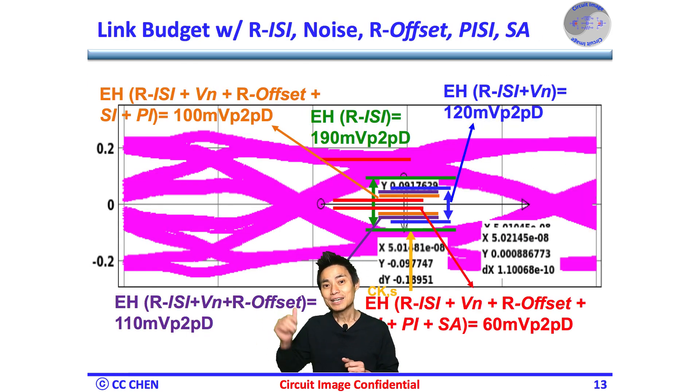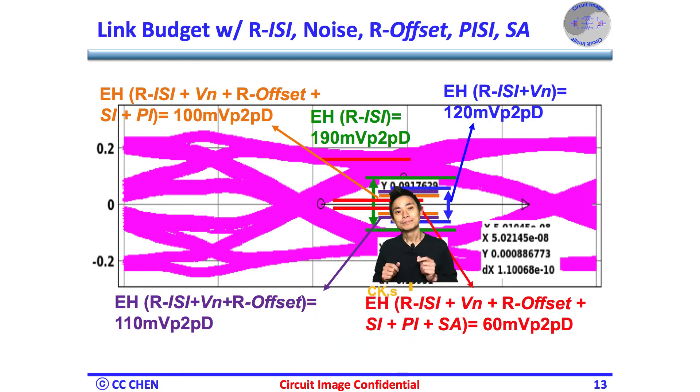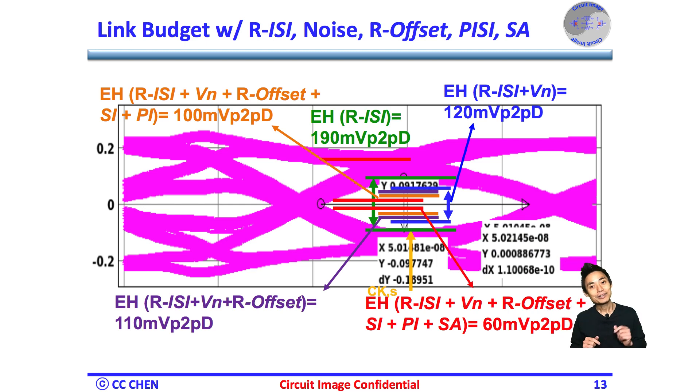So, the final sensitivity of the sampler at 8 gigabit per second would be 40 mV, and the final eye height margin of the link budget would be 60 mV peak-to-peak differential.